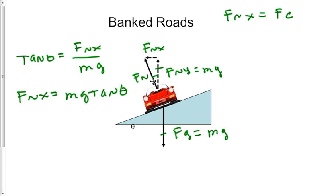Now remember, that theta is right here, which is also the same as the angle of the inclined. So substituting this, where I see force normal x, and then force centripetal, we know that equation. It would look like this. mg tangent theta is equal to mv squared divided by r.